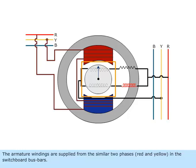The armature windings are supplied from the similar two phases, red and yellow, in the switchboard busbars.